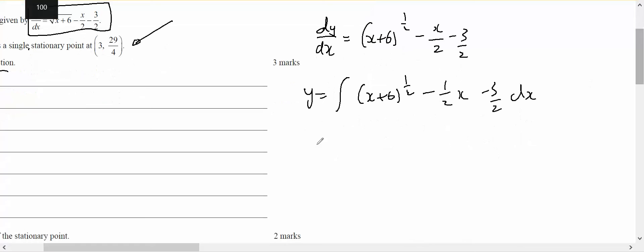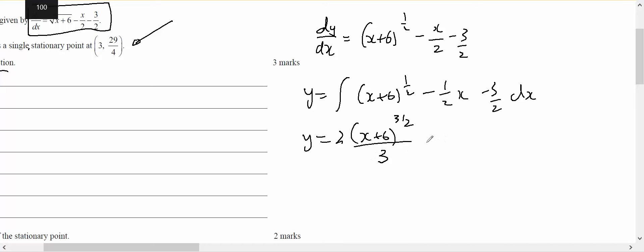Which means that y will equal x plus six to the three on two, on three on two — and the value of a was one, so that's okay — minus a half times x squared on two, minus three on two x, plus some constant c.